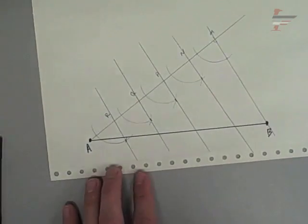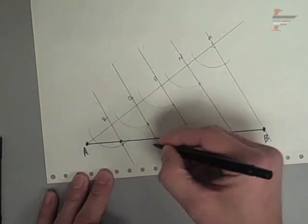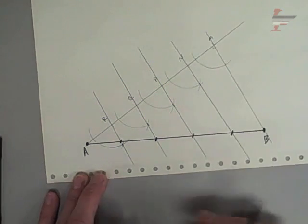And so that, those lines split up AB, and it splits it up into five equal parts. There we go.